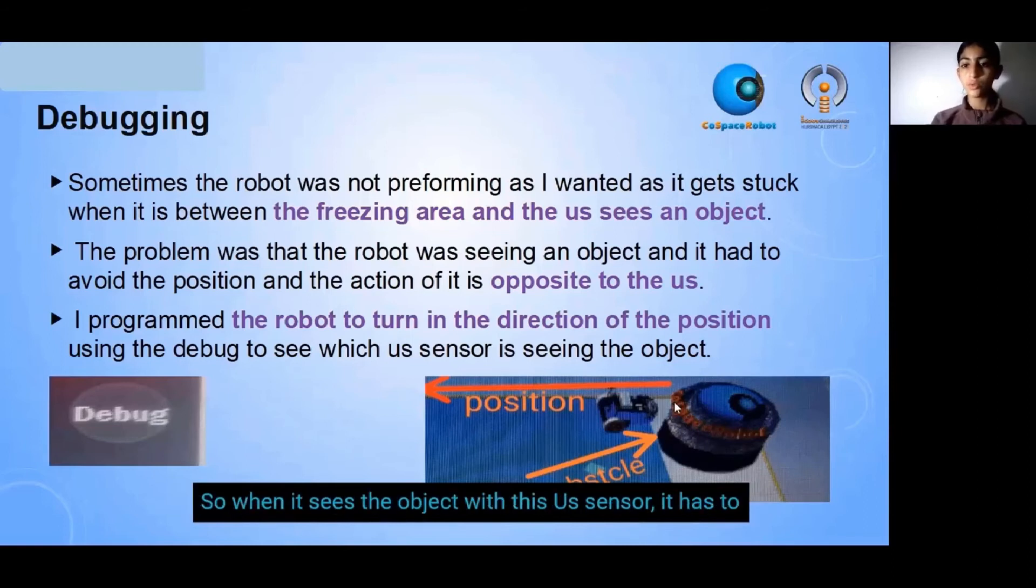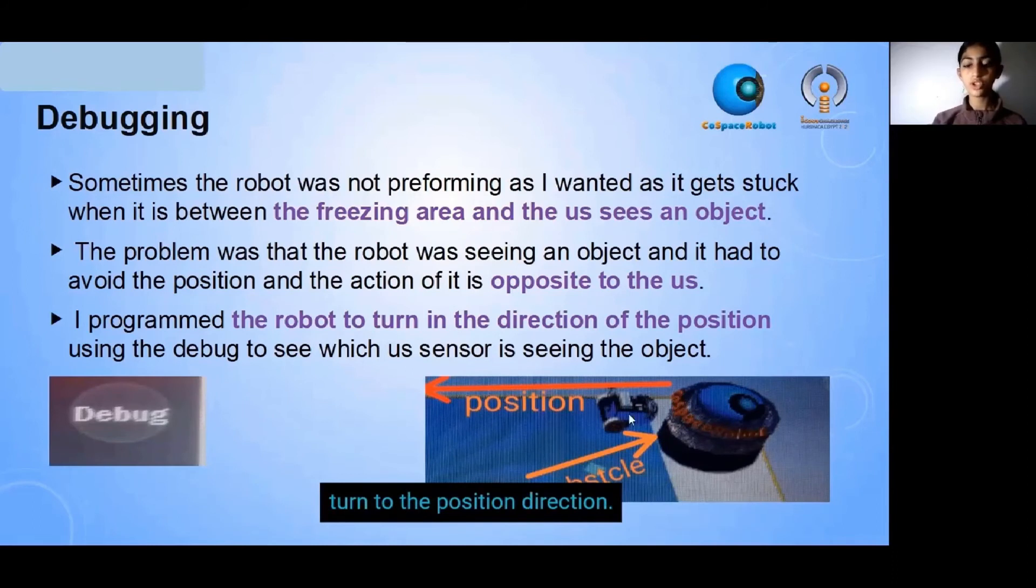So when it sees the object with this US sensor, it has to turn to the position's direction.